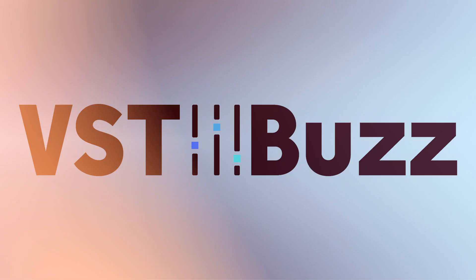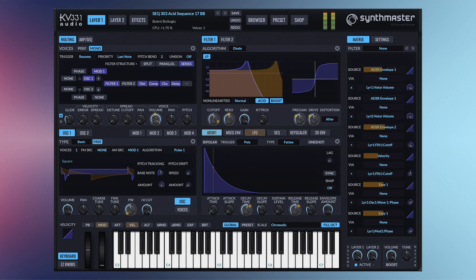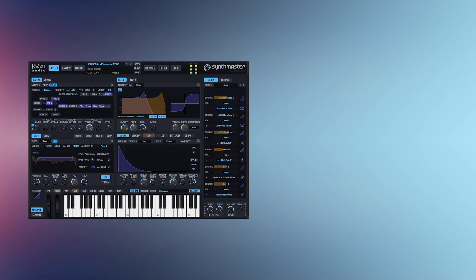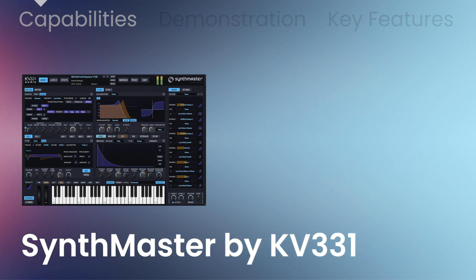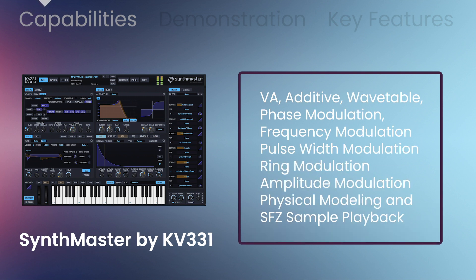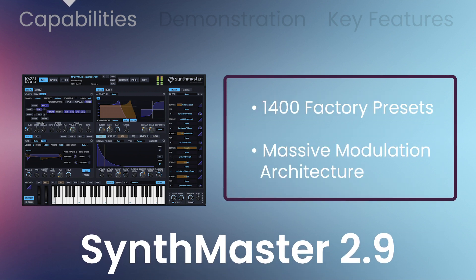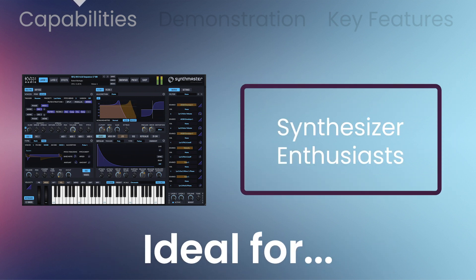VSD Buzz presents 65% off SynthMaster 2.9 by KV331 Audio, an all-around semi-modular software synthesizer and effects plugin that features many different synthesis methods including VA, additive, wavetable, phase modulation, frequency modulation, pulse width modulation, ring modulation, amplitude modulation, physical modeling, and SFZ sample playback synthesis. With 1400 inspiring factory presets and a massive modulation architecture, SynthMaster 2.9 is a must-have for all synthesizer enthusiasts.